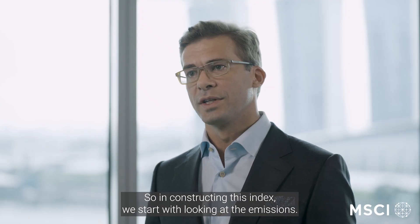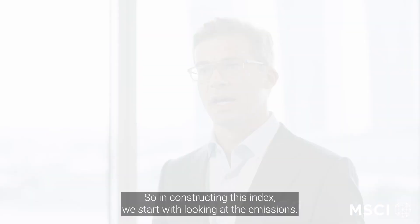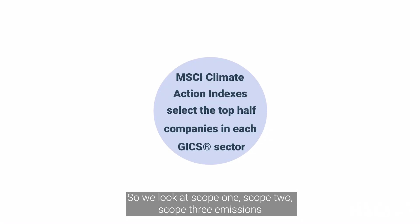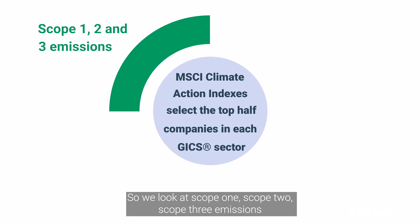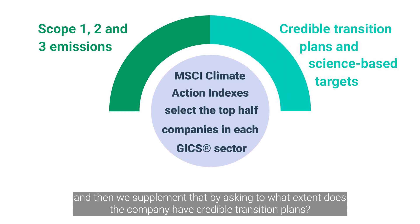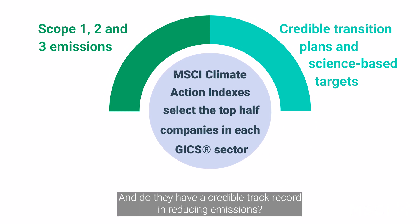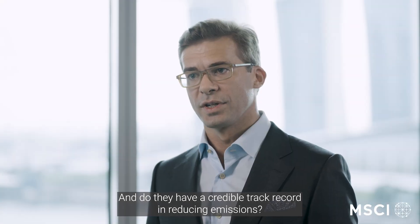In constructing this index, we start with looking at the emissions — scope 1, scope 2, scope 3 emissions. Then we supplement that by asking to what extent does the company have credible transition plans? Do they have science-based targets? And do they have a credible track record in reducing emissions?